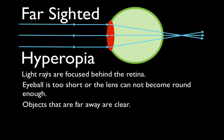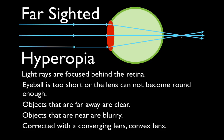When you're farsighted, objects that are far away are clear — you can see things that are far away. The focal point is behind the retina, so it all has to do with far. Obviously, if things far away are clear, then things that are near are blurry. When you go to the doctor and they say you're farsighted, they will correct your vision with converging lenses.